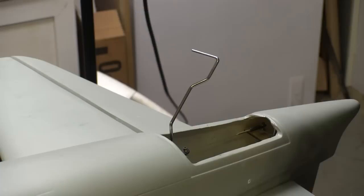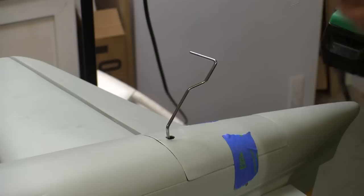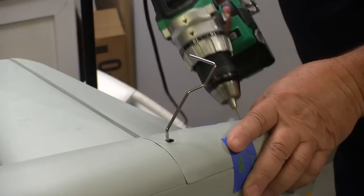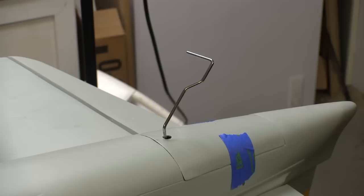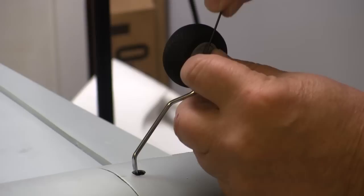Now that I have all the pull-pull systems and the servos installed, I can install this cover. I thought about trying to camouflage this door somehow, but seeing this houses the only access I have to all those pull-pull cables back there, just get used to seeing some screws in this thing. And then I can install the tail wheel. This one actually came with the kit.